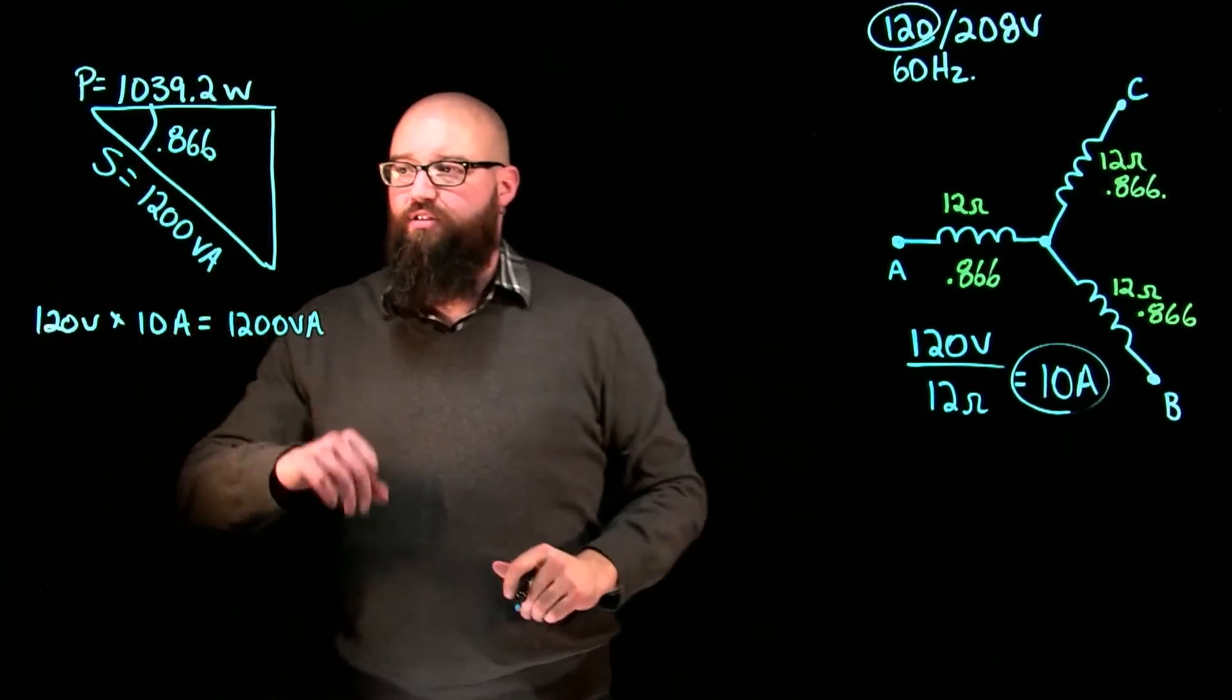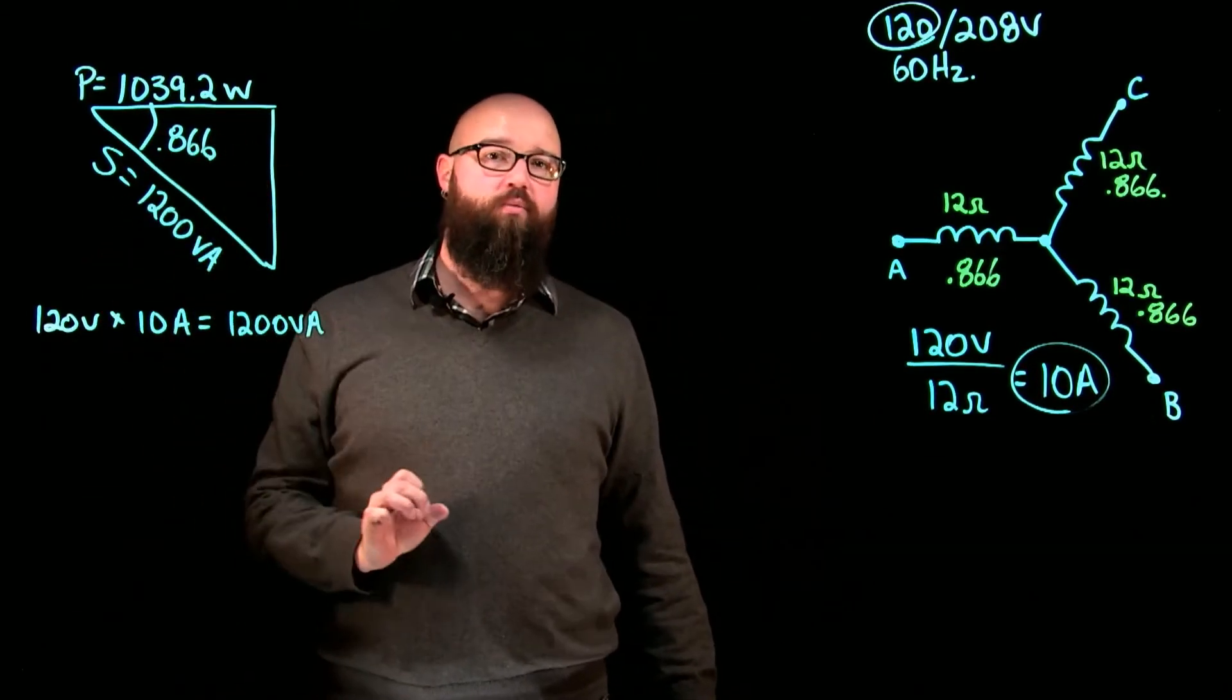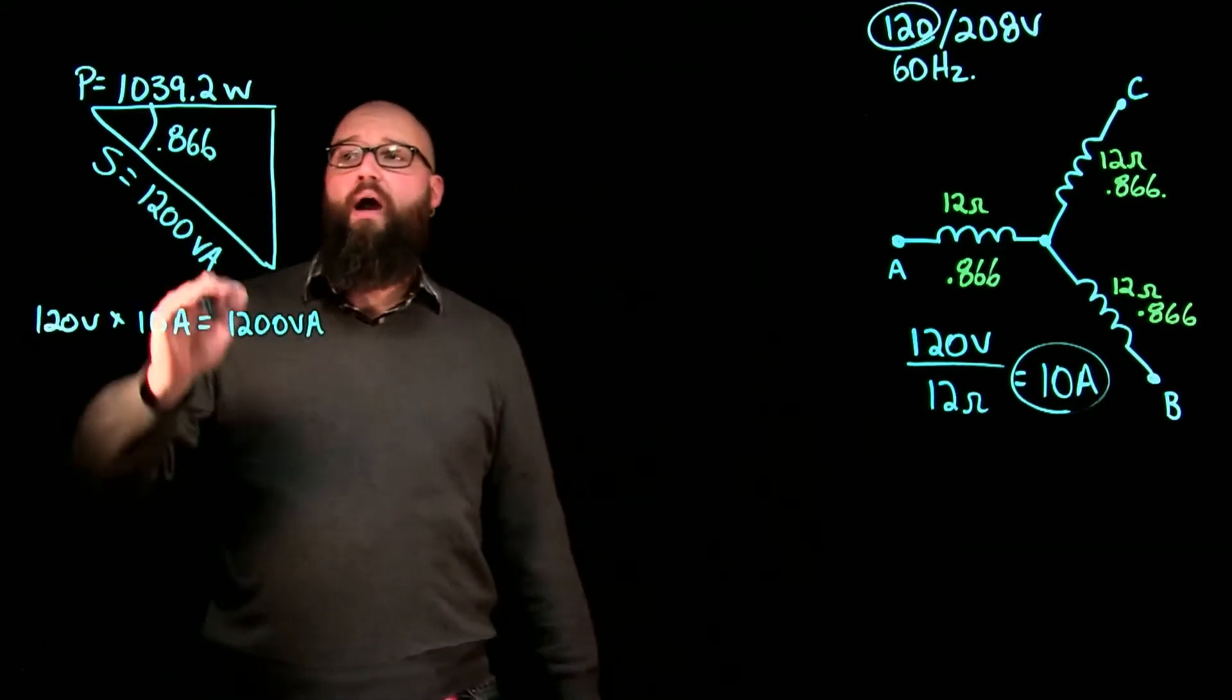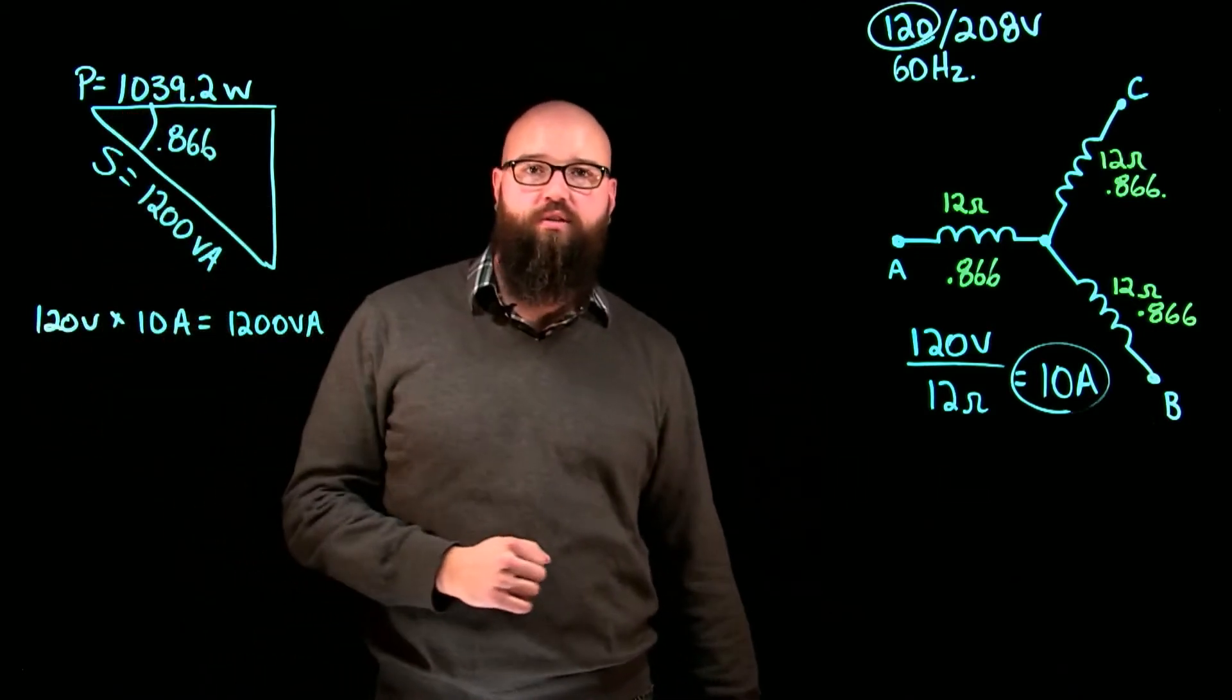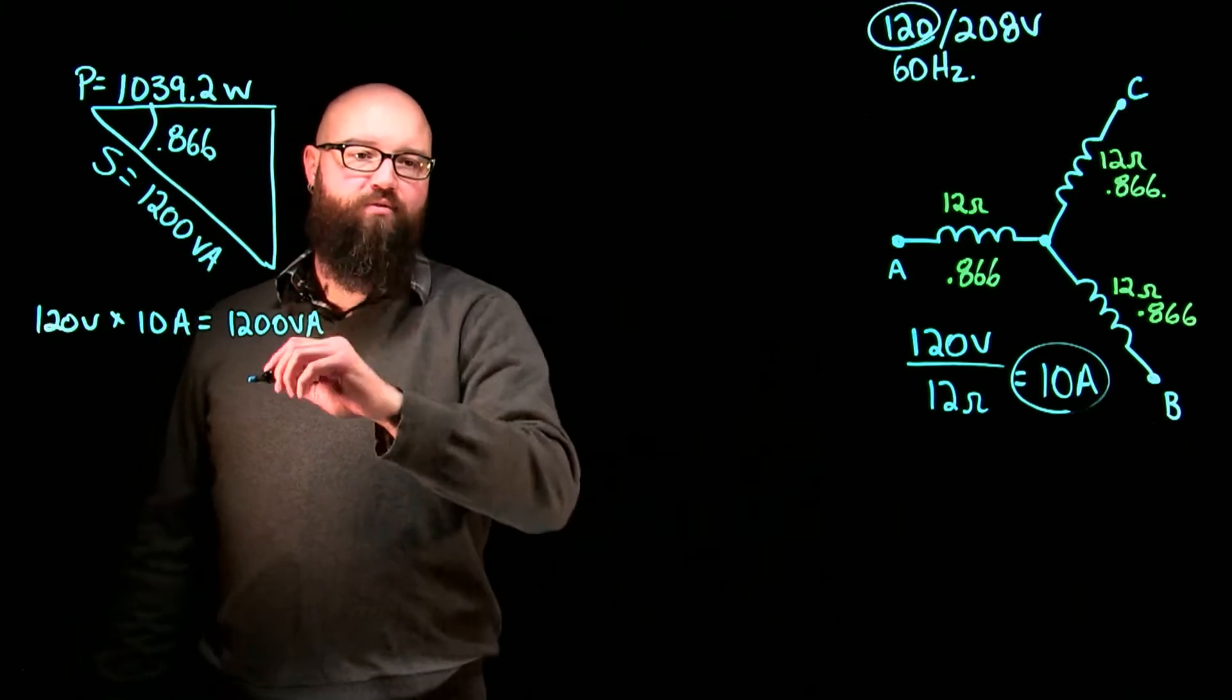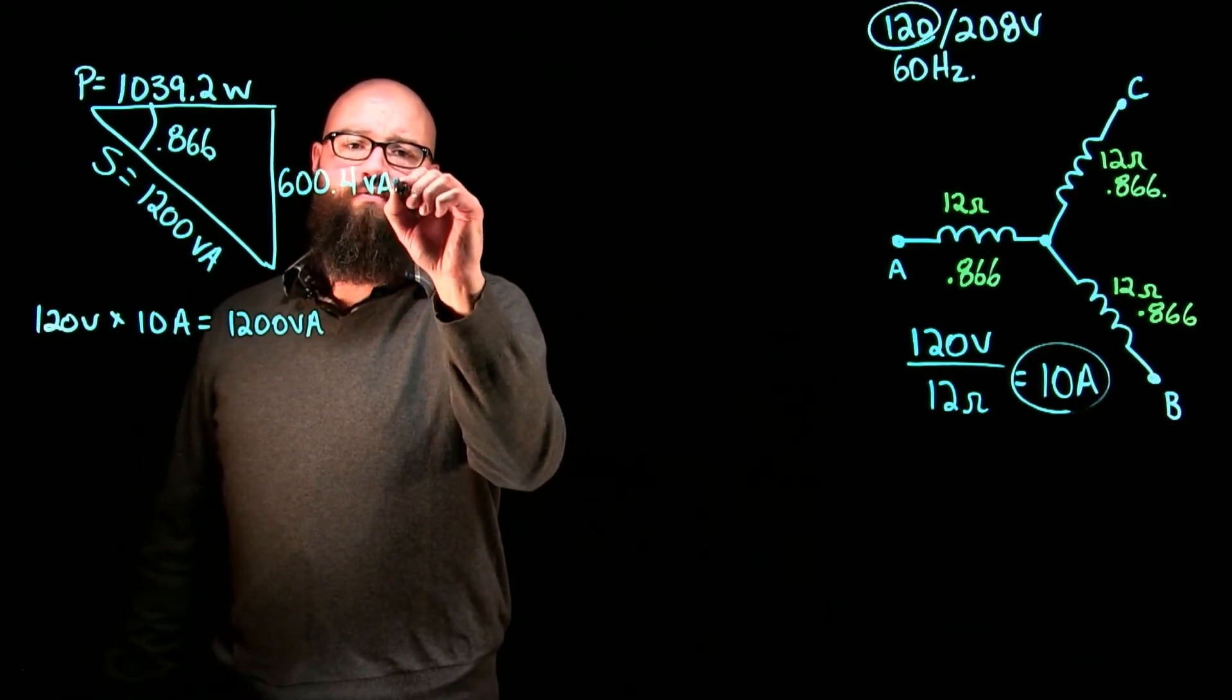If I was to use Pythagorean theorem or I could do 1200 divided by the sine of this angle which works out to be 30, I would end up with 1200 squared minus 1039.2 squared. The square root of that answer should give me my reactive power of 600.4 vars.